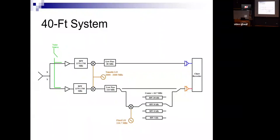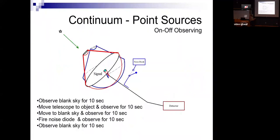One of the components in this system is a coupler which adds a signal from a noise source that has a switch which can be opened or closed. In radio astronomy, almost all analysis is done using ratios and differencing between signals. In a typical observation, you point toward the object part of the time and toward a blank piece of sky part of the time. While looking at blank sky, you turn on this noise source — the calibration source — and then turn it off again. So we have four phases: off source, on source, noise source on, noise source off.